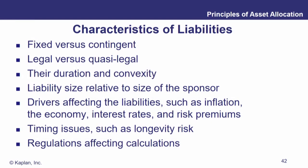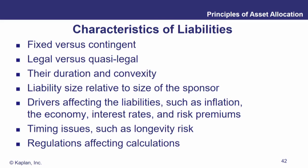We can also talk about the duration and convexity of liabilities. This is particularly important for banks, which tend to have assets with longer duration — namely the loans they make, like mortgage loans — while their deposits, their liabilities, tend to be short duration: checking accounts, savings accounts, certificates of deposits. Liability size relative to the size of the sponsor gives a sense of the magnitudes. Drivers affecting the liabilities — inflation, the economy, interest rates, risk premiums — can all be incorporated to figure out how macroeconomic data affects the liabilities.